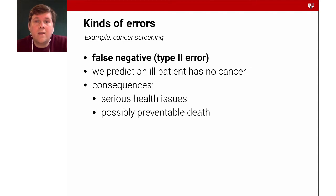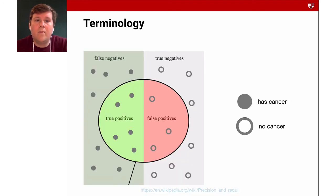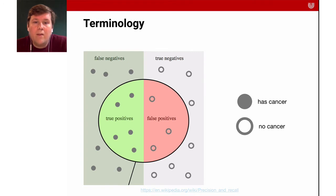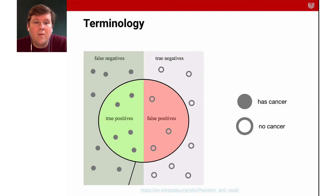So it's very important to consider the errors that can happen and what they mean for the individual and the problem you're trying to model. Here is a visualization from Wikipedia on false positives and true positives. On the left we have people with cancer. We have false negatives — cancer cases that go undetected — true negatives, true positives where we make the right prediction, and false positives where we make the wrong prediction.